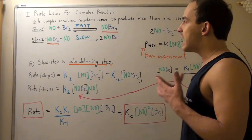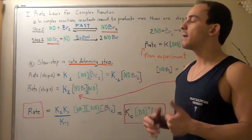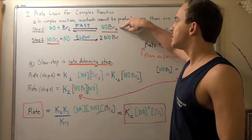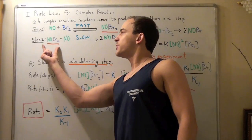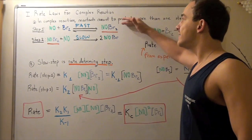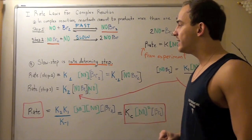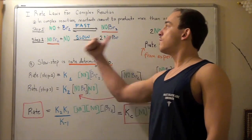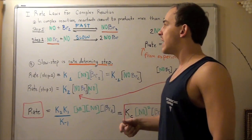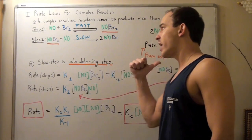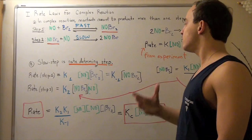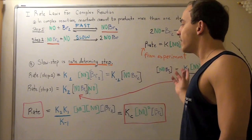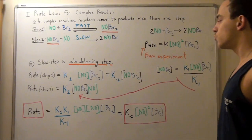Whenever the rate-determining step is not the first step but the second or third step, we have to take the intermediate into consideration, because the intermediate concentration determines the concentration of reactants for the slow step. What we did was: first, find the rate law for the fast first reaction going forward and backward; then find the rate law for the slow second reaction; then express the intermediate concentration in terms of all other species and plug that into our equation to find the final rate law.